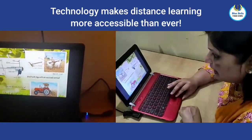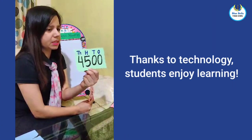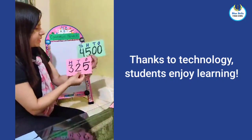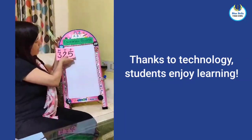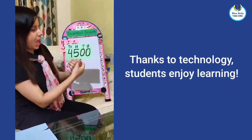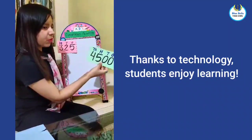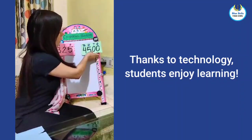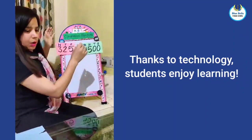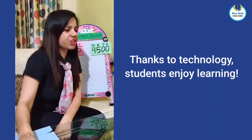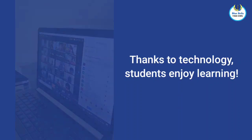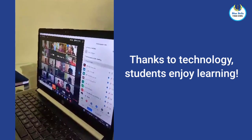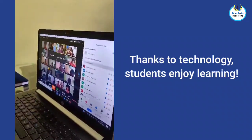We want to compare these numbers. I am sticking the first number here: 325. And the second number is 4500. Who will tell me which number is bigger? 4500 is in the thousands place, so it is the larger number.